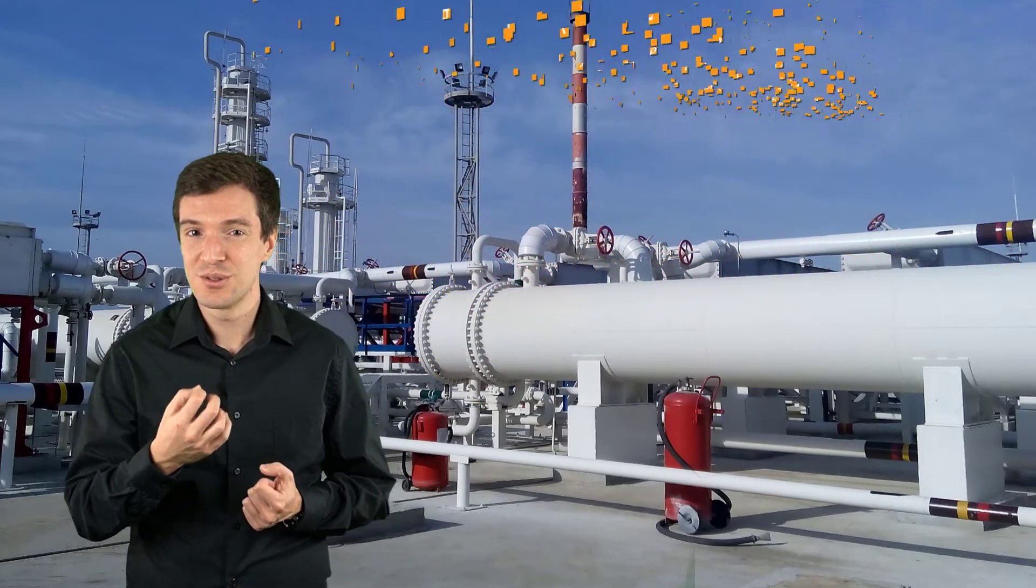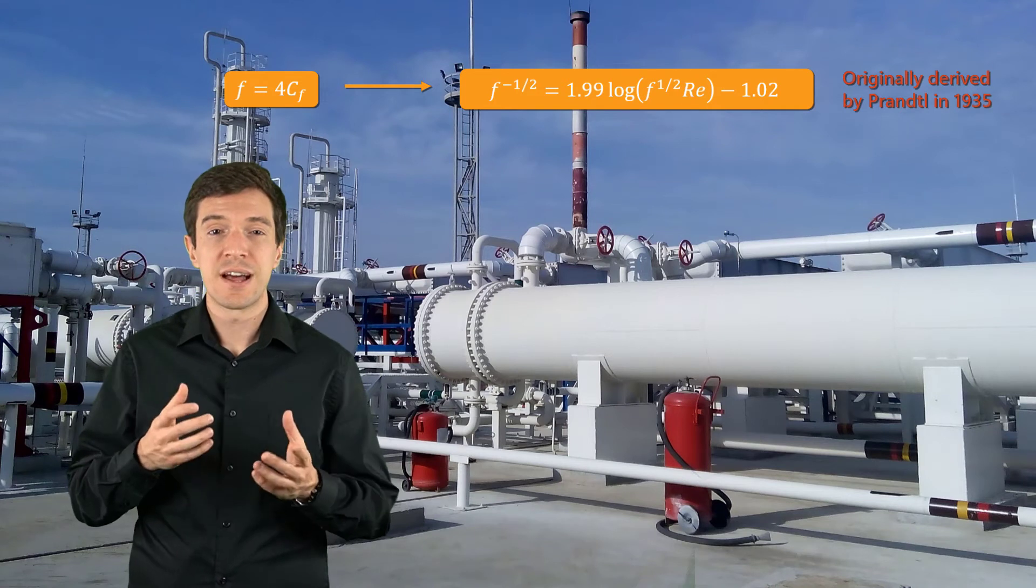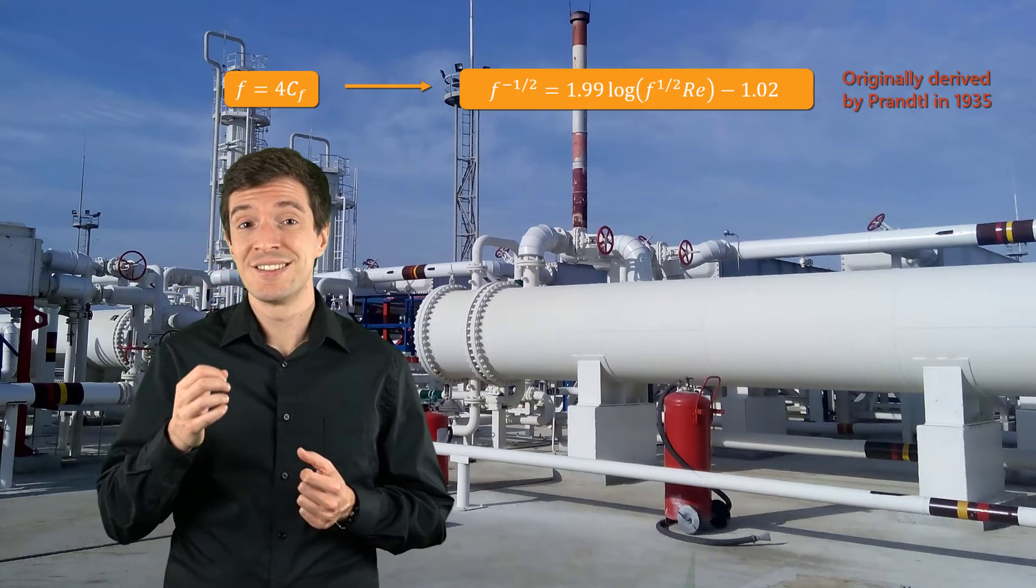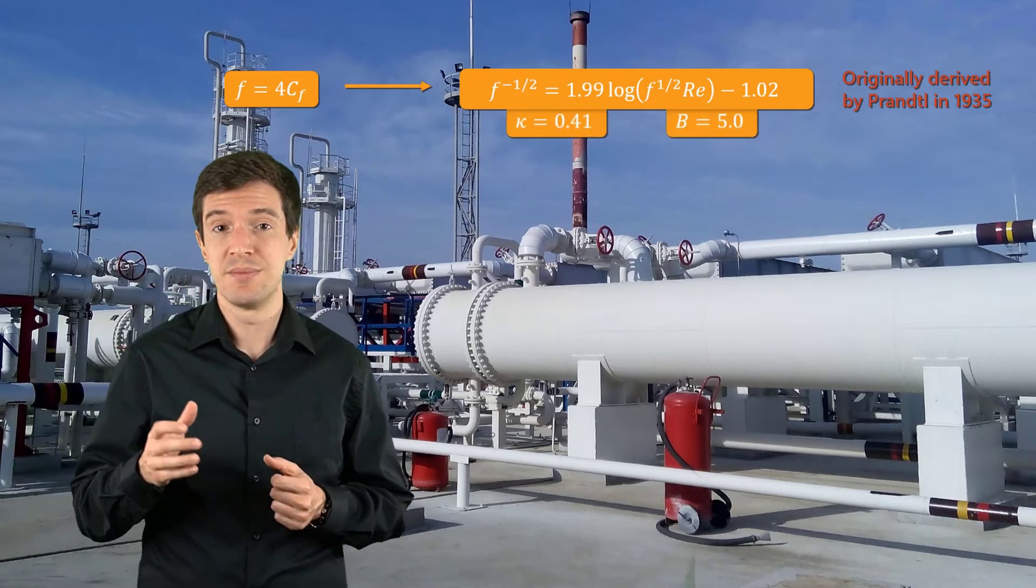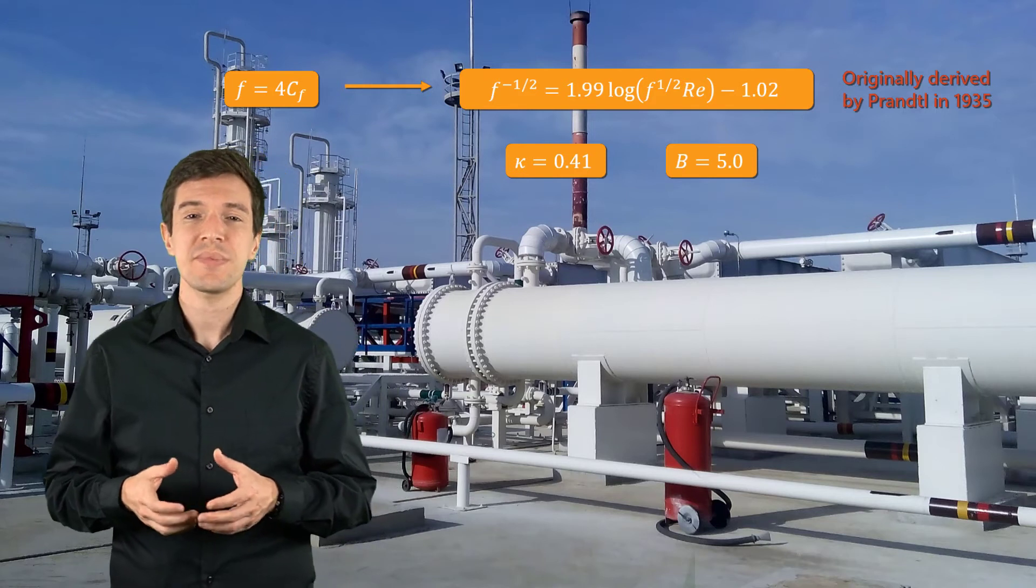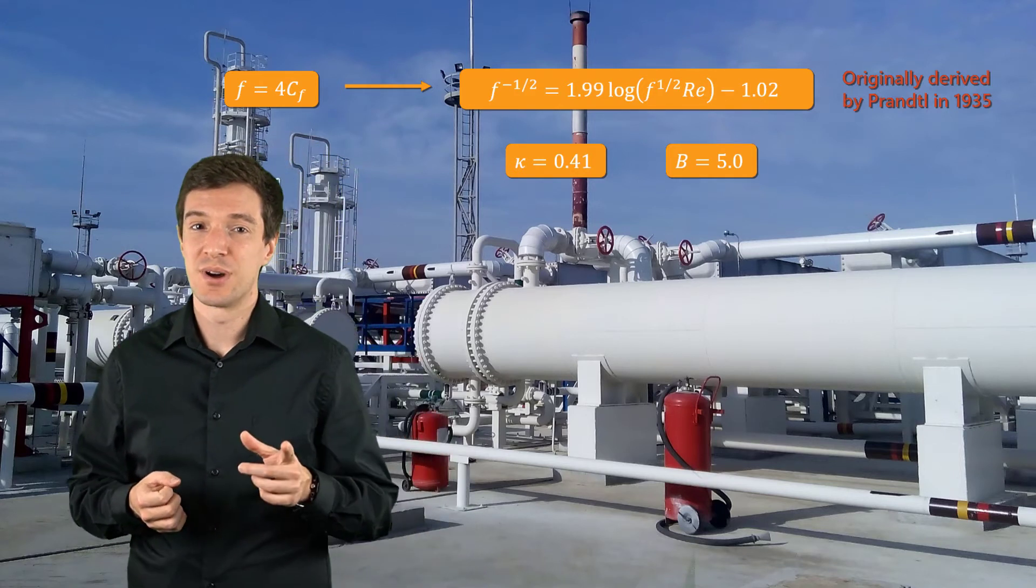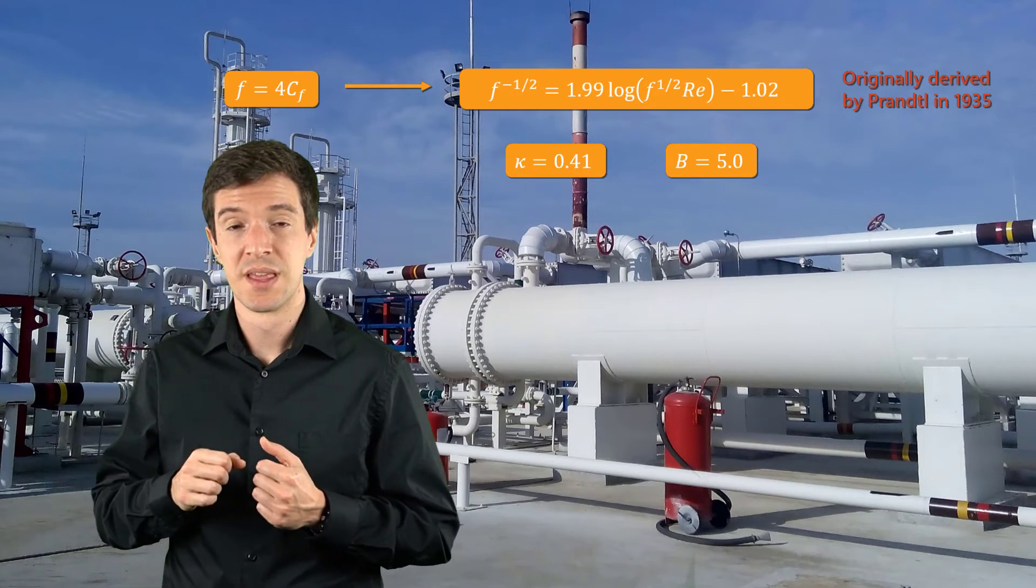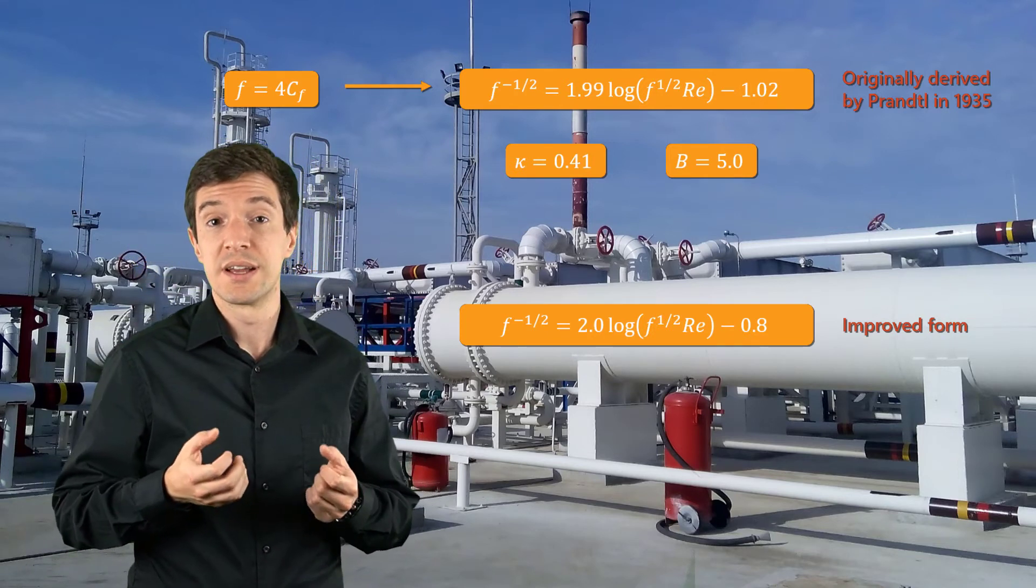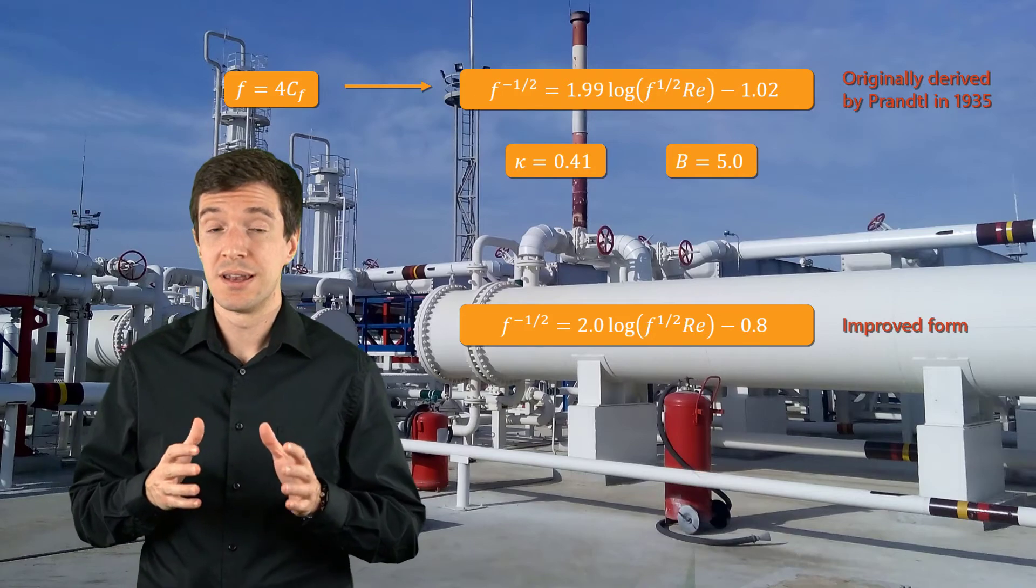We can then introduce the Darcy friction factor that is equal to 4 times the pipe friction factor and rewrite the relation into this form. That was originally derived by Prandtl in 1935 using the constants k and beta equal to 0.41 and 5 respectively. This expression is a good first approximation of the friction factor. However, the formula does not take into account the viscous sublayer and the centerline region. Prandtl improved this relation changing the constants so that the solution will be a better fit with experimental pipe friction data. This is valid for any Reynolds number larger than 4000.